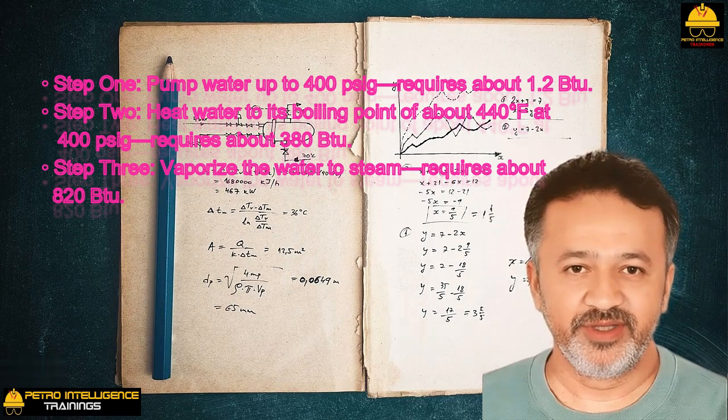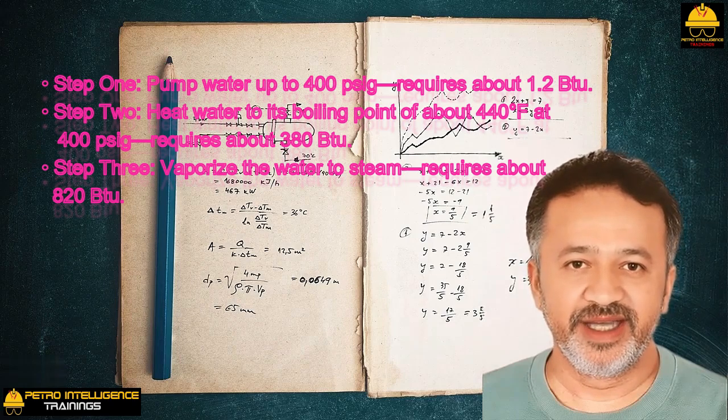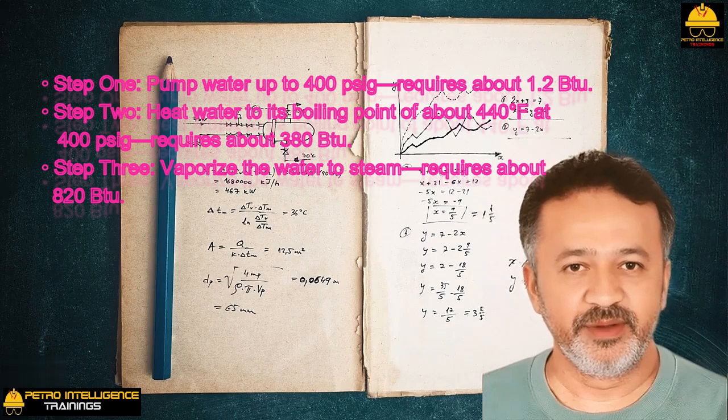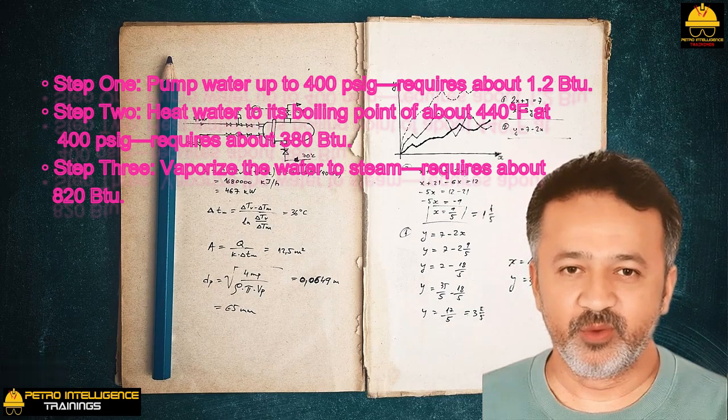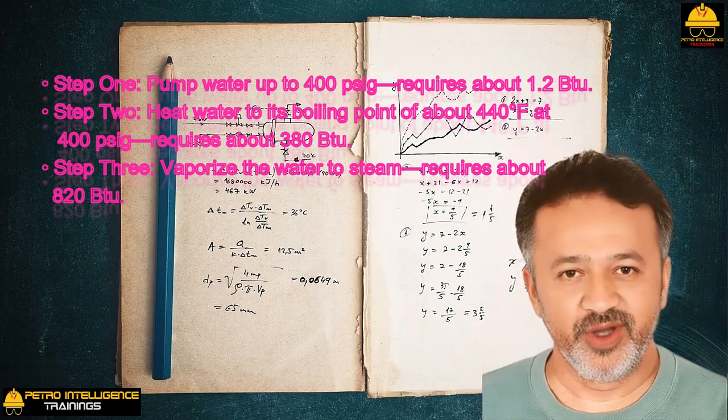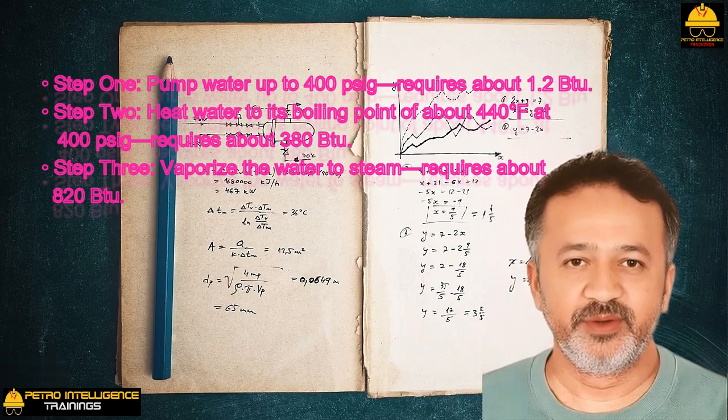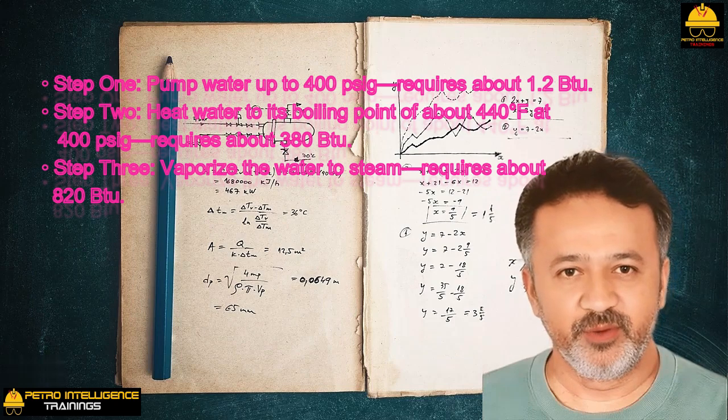Step one: pump water up to 400 psig requires about 1.2 BTU. Step two: heat water to its boiling point of about 440 degrees Fahrenheit at 400 psig requires about 380 BTU. Step three: vaporize the water to steam requires about 820 BTU. Any boiler plant operator trying to optimize steam generation efficiency will worry most about the firebox and convective section economizer, and not the boiler feed water pump.